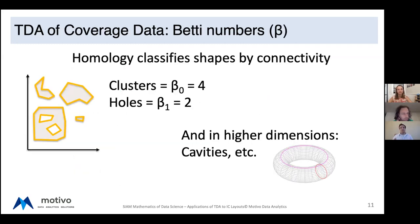Everyone has now had a bit of background on homology and TDA. We're going to be focusing mostly on Betti numbers, which give you a classification of spaces. The Betti numbers are indexed from zero over the natural numbers, giving you a count of the number of homological features: for the i-th Betti number, that's the number of i-dimensional holes—except for the case of zero, which gives you the number of connected components or clusters. In the graphic on the left, there are four components and two holes. TDA also covers higher-dimensional cavities, but we're going to be mostly focusing on the zeroth and first Betti numbers.